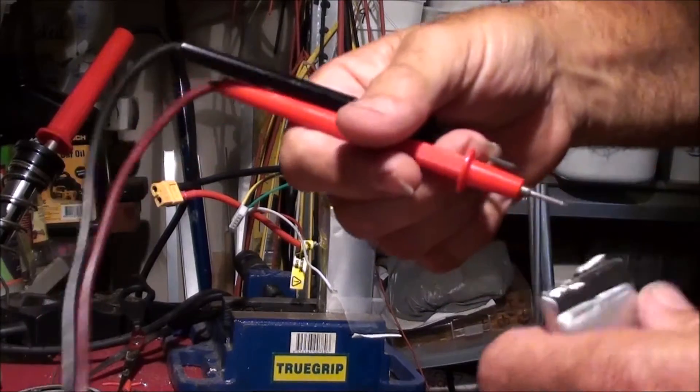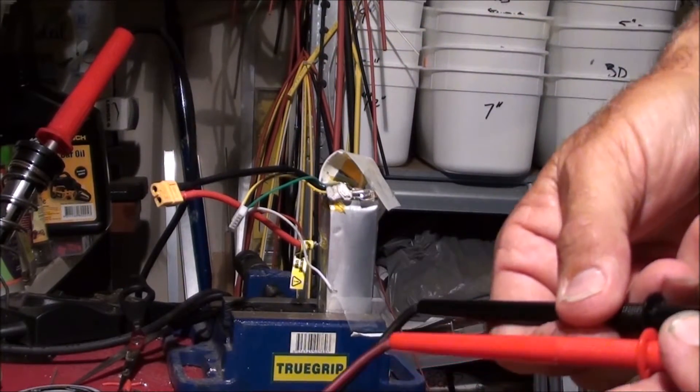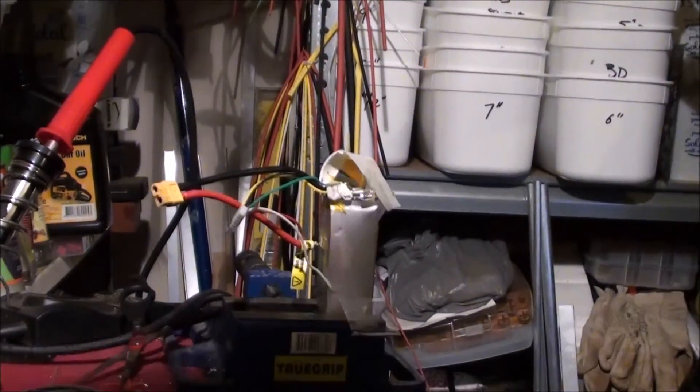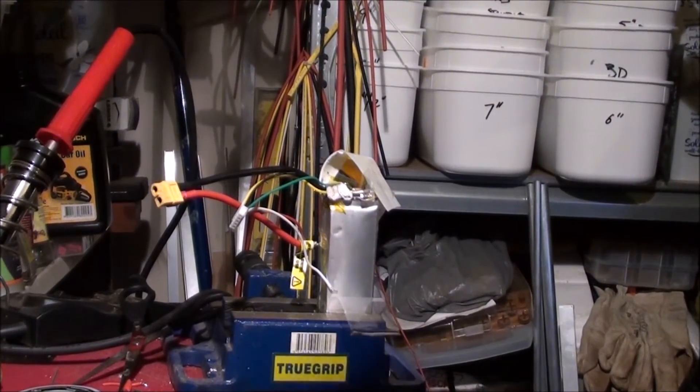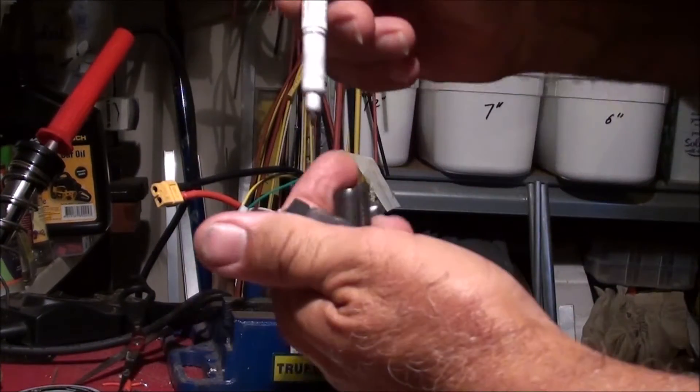We'll throw the multimeter on it, and we'll have a look. And that's as dead as a doorbell. That's just nothing. Zero. So that gets the cross of F.